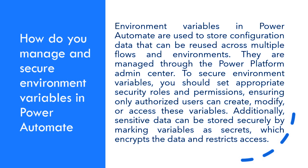How do you manage and secure environment variables in Power Automate? Environment variables in Power Automate are used to store configuration data that can be reused across multiple flows and environments. They are managed through the Power Platform Admin Center. To secure environment variables, you should set appropriate security roles and permissions, ensuring only authorized users can create, modify, or access these variables. Additionally, sensitive data can be stored securely by marking variables as secrets, which encrypts the data and restricts access.